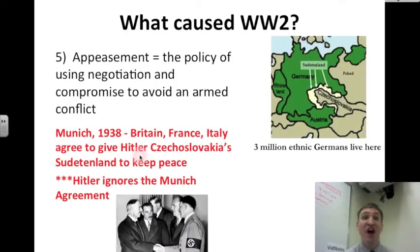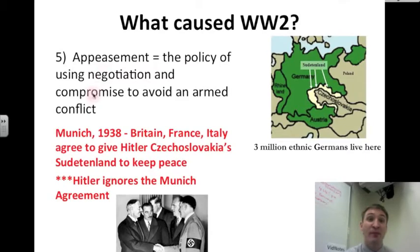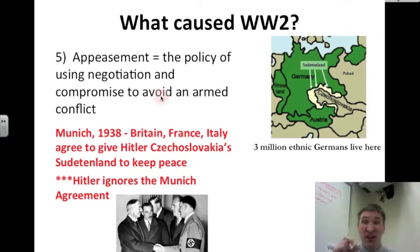Number five: appeasement caused World War II. Appeasement is the policy of using negotiation and compromise to avoid an armed conflict, which sounds good, but it's hard to appease Adolf Hitler. But that's what the European powers tried to do.